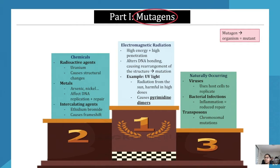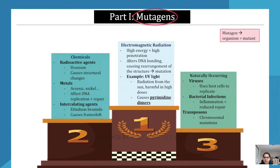Starting Module 6 — the first dot point asks us to look at mutagens: what are the different types of mutagens and what mutations do they cause. A mutagen is an agent that causes mutations, and can also be known as a mutant. There are three types of mutagens we're looking at: chemical, electromagnetic, and naturally occurring.